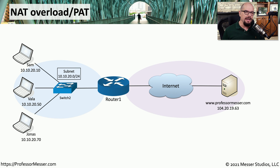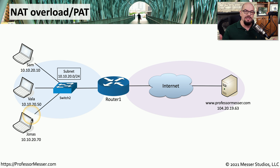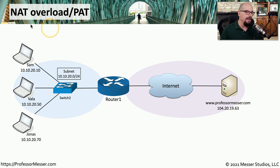That process works fine if there is a single IP address on the inside that needs to be translated. But what if you have multiple IP addresses, or even tens, hundreds, or thousands of devices that need to communicate? In that situation, you'll perform a special kind of network address translation called source network address translation, a NAT overload, or a port address translation.